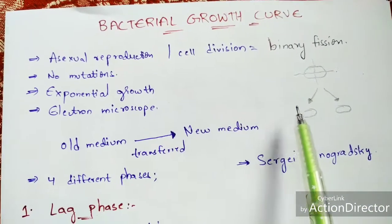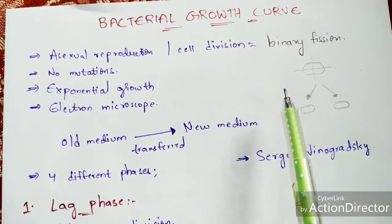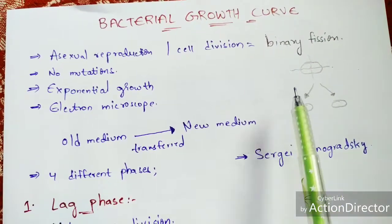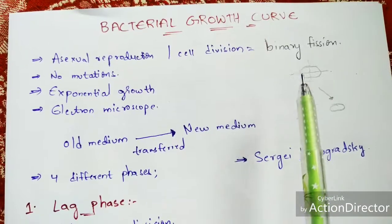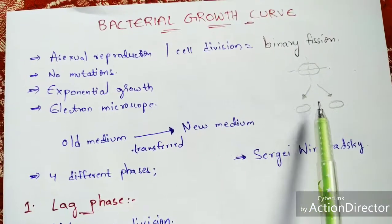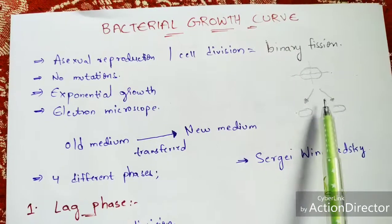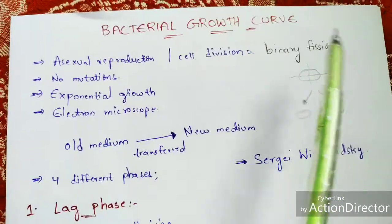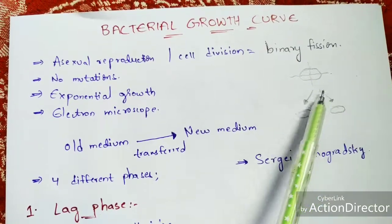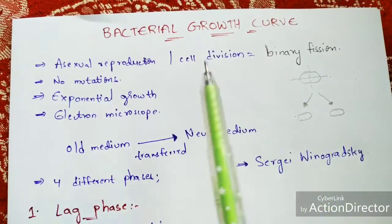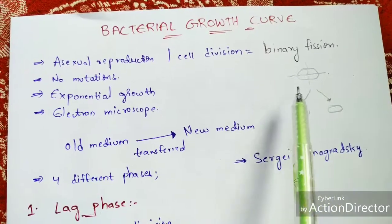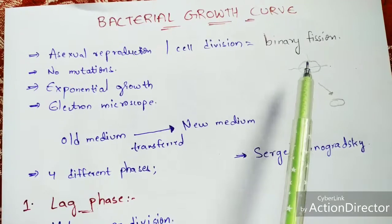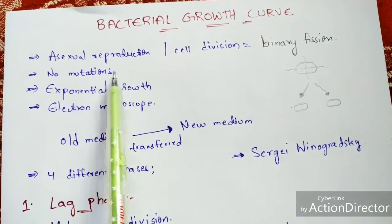The daughter individuals formed are similar in characteristics to the mother cell because they are genetically identical. There will be no mutation — mutation means changes in characteristics, physiological traits, or behavior. You cannot see any such changes in binary fission, so there will be no mutations in this phenomenon.